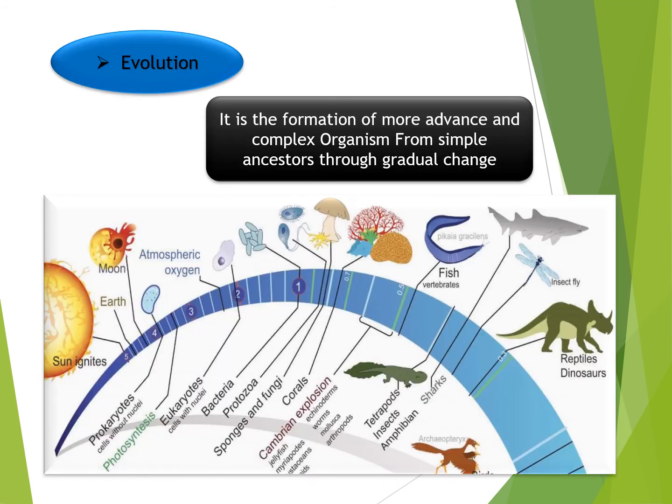Next is evolution — the formation of more advanced and complex organisms from simple ancestors through gradual changes. A simple diagram can be helpful to understand the evolution process, showing the progression from simple to complex life.